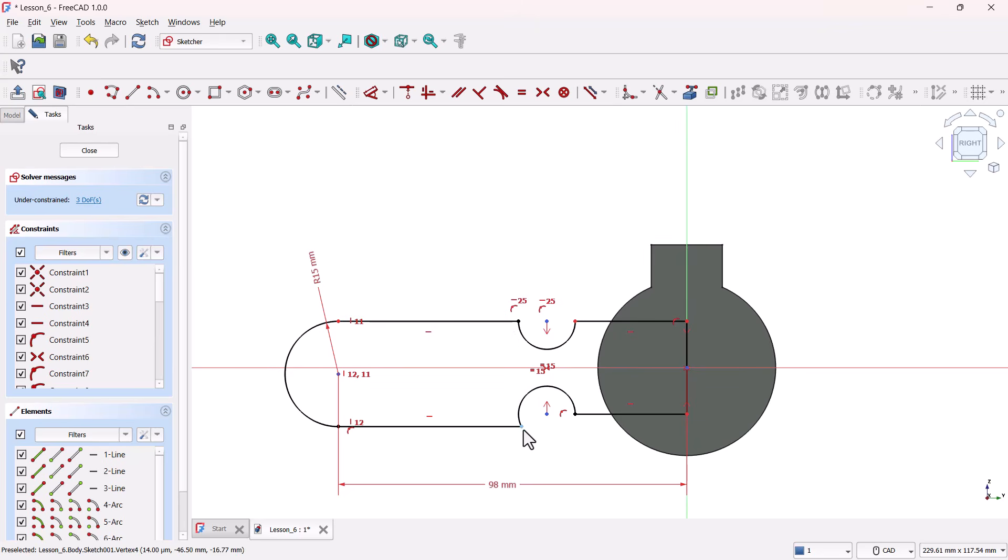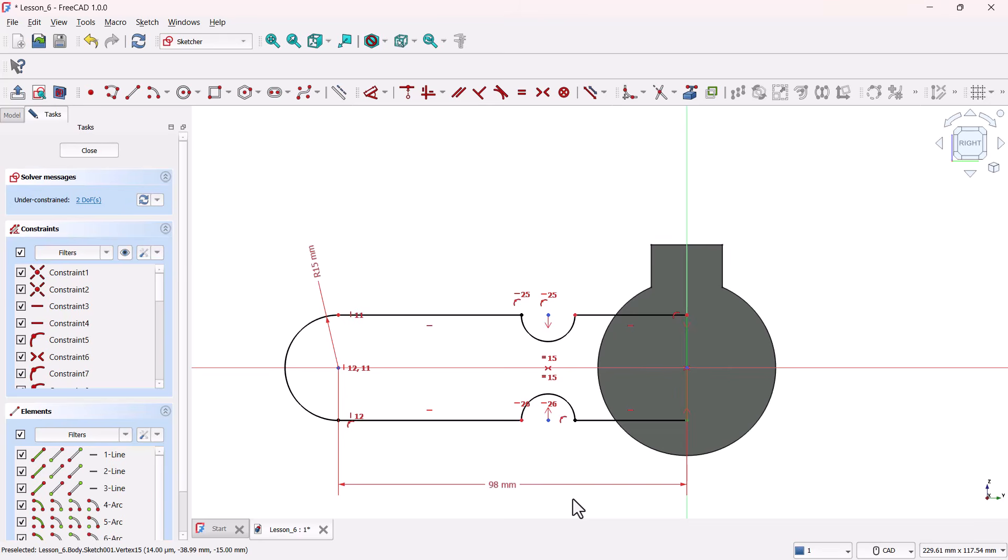And the same thing applies to this circle. Also, we need these three points aligned horizontally too. Select them, apply the horizontal constraint again, and done.